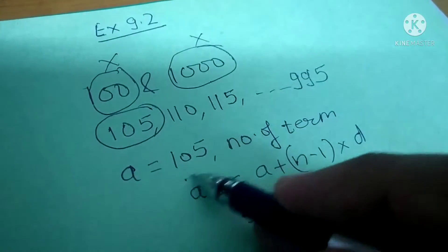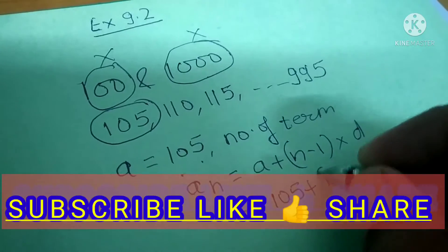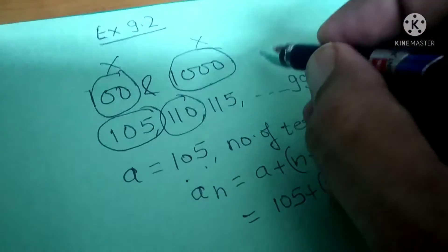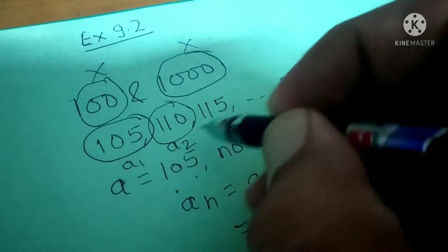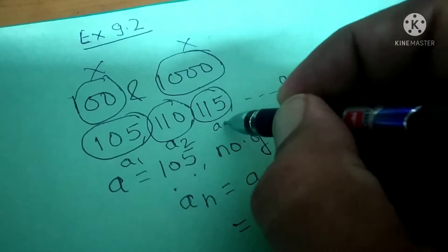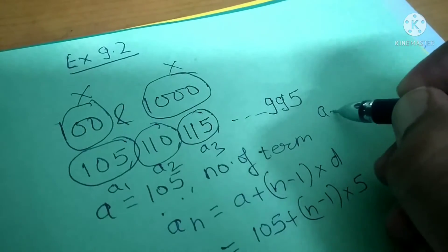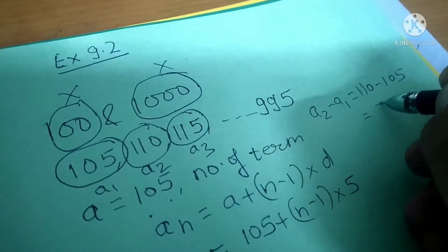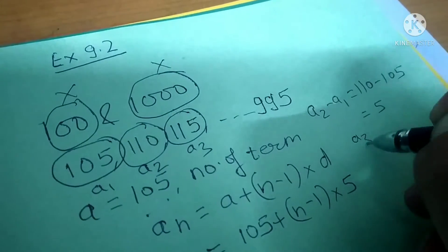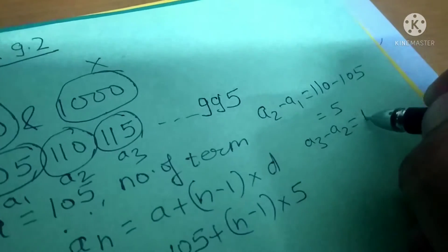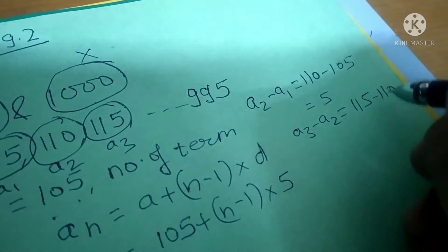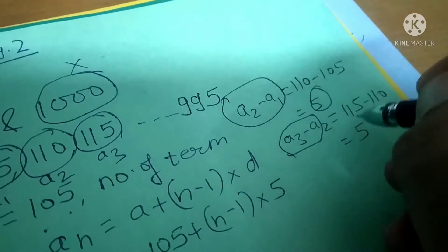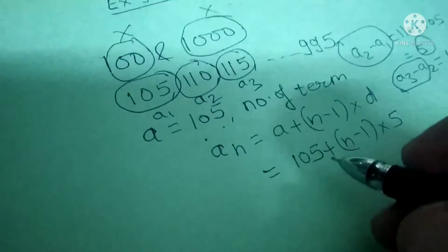So this becomes 105 plus n minus 1, and what is d? It is 5. Because second term minus first term equals 110 minus 105, which equals 5. And third term minus second term equals 115 minus 110, which also equals 5. So d is 5.